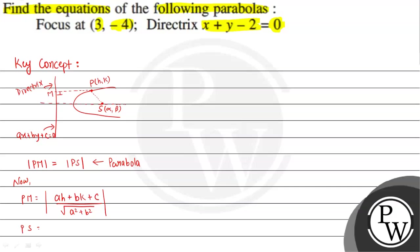And PS, which is the distance between two points, we use the distance formula: PS equals square root of (h minus alpha) whole square plus (k minus beta) whole square.